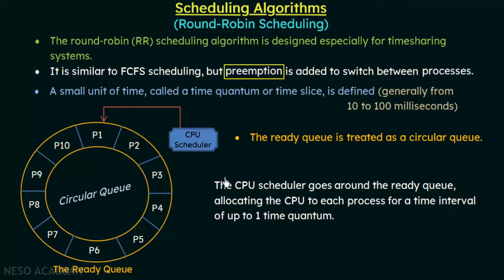The ready queue where the processes are waiting is treated as a circular queue, as shown in this diagram. Think of it as a circular queue where processes are waiting for their turn to get the CPU. Here we have 10 processes: P1, P2, P3 up to P10.